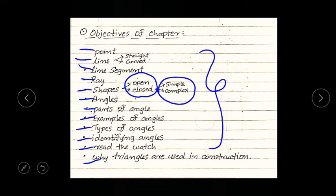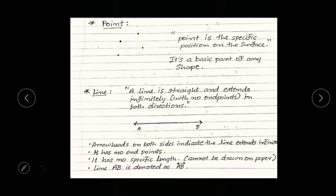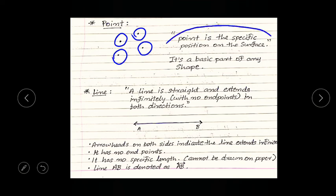This chapter is very interesting, so please pay attention. If any of you don't understand anything, please message me or contact me and we will come up with a solution. Let's start with point — what is a point? As you can see, these four dots are visible. These four dots are nothing but points.